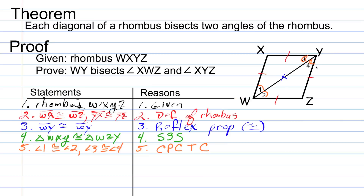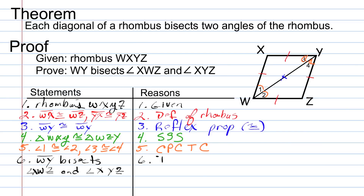Now that those angles are congruent, that's enough since the measure of angle 1 and the measure of angle 2 make up the measure of the bigger angle that we're trying to show is bisected — which we have, since it's made up of two congruent angles. The last statement is the proof statement: we've shown enough to prove that segment W-Y bisects angle X-W-Z and angle X-Y-Z by the definition of angle bisector. We used triangle congruence to prove the parts we needed through CPCTC — triangle congruence coming back to help us with quadrilateral congruence.